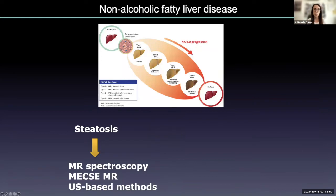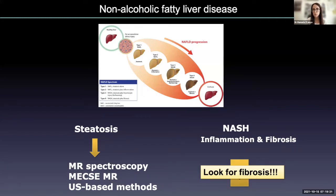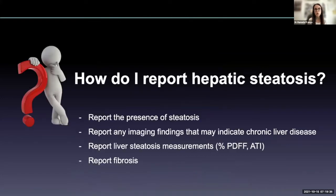We have imaging techniques to detect and even quantify liver steatosis. But the main problem in patients with non-alcoholic fatty liver disease is to recognize those with NASH, because these are the patients with the worst prognosis who may progress to liver cirrhosis. To identify these patients, we must look for fibrosis. How do I report hepatic steatosis? I report the presence of steatosis, any imaging finding that may indicate chronic liver disease, liver steatosis measurements with MR or ultrasound if available, and also fibrosis if assessable.